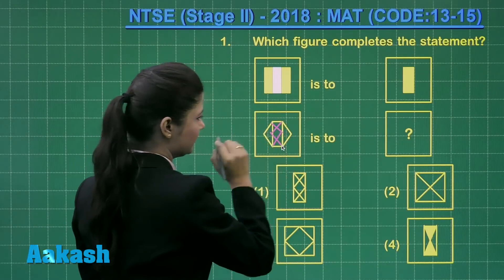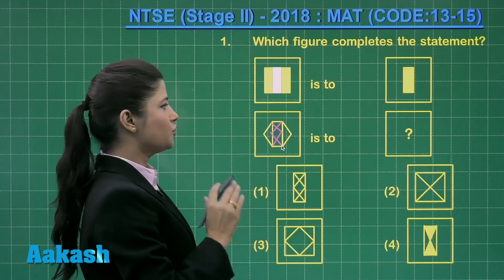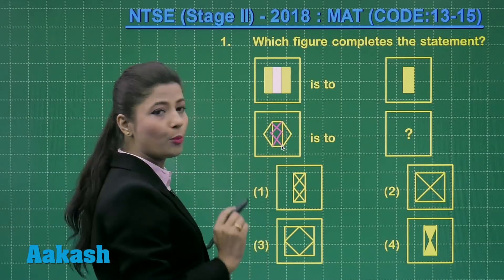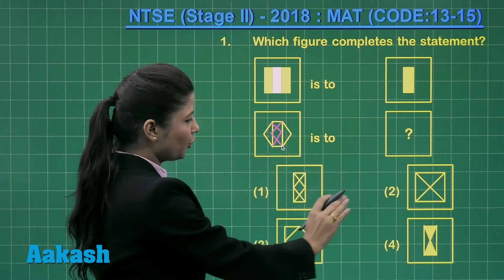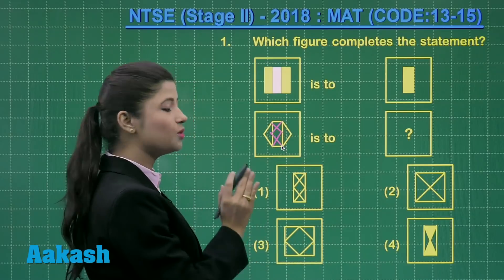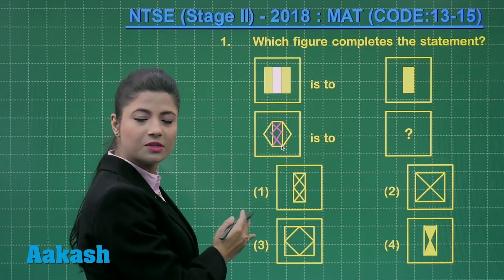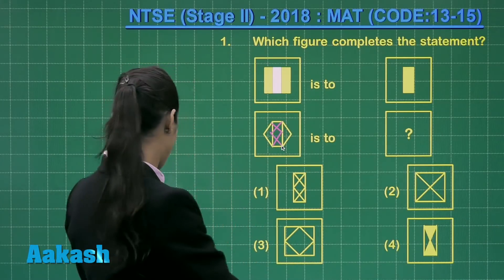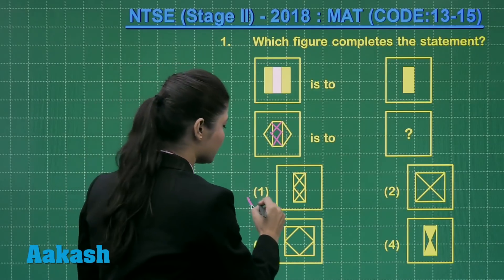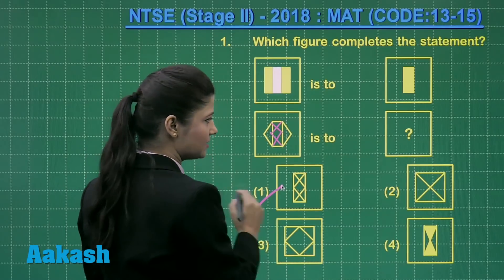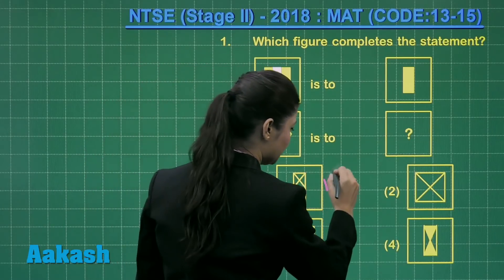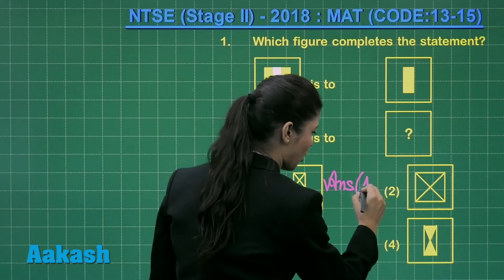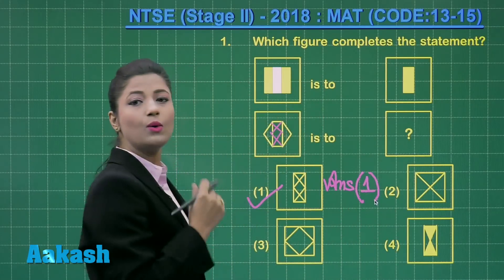On the right side you will get this shape, so finally this type of shape will be obtained. Out of the four options, you can clearly observe that option 1 gives you the correct pattern. So the answer for this question is option number 1.